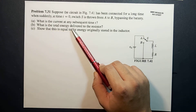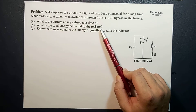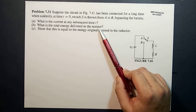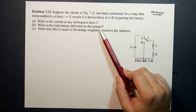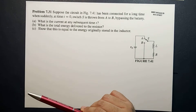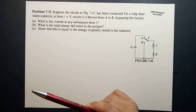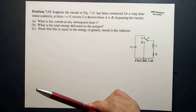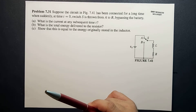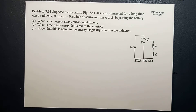Letter B: what's the total energy delivered to the resistor? So that means we have to take the time derivative of the stored energy and then equate that to Joule heating, and then we're going to calculate the total energy delivered.